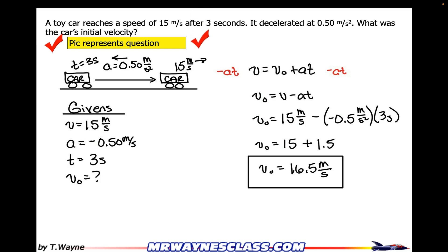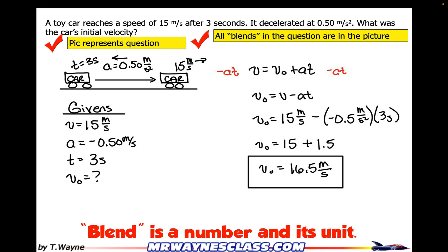Okay, let's keep going. All blends in the question are in the picture. Remember, a blend is a number and a unit. And in science class, we use blends in our equations. We suppress the units and do math and then put blends in our answers. That's numbers and units.